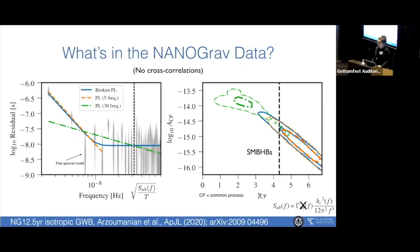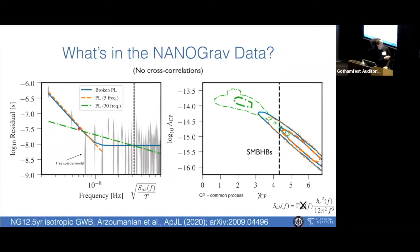Have we detected the stochastic gravitational wave background? No. We have not, no matter how many hundreds of papers claim that we have. We are not making that claim. What we claim is that there's some sort of common signal in all of the pulsars in the 12-and-a-half-year data.